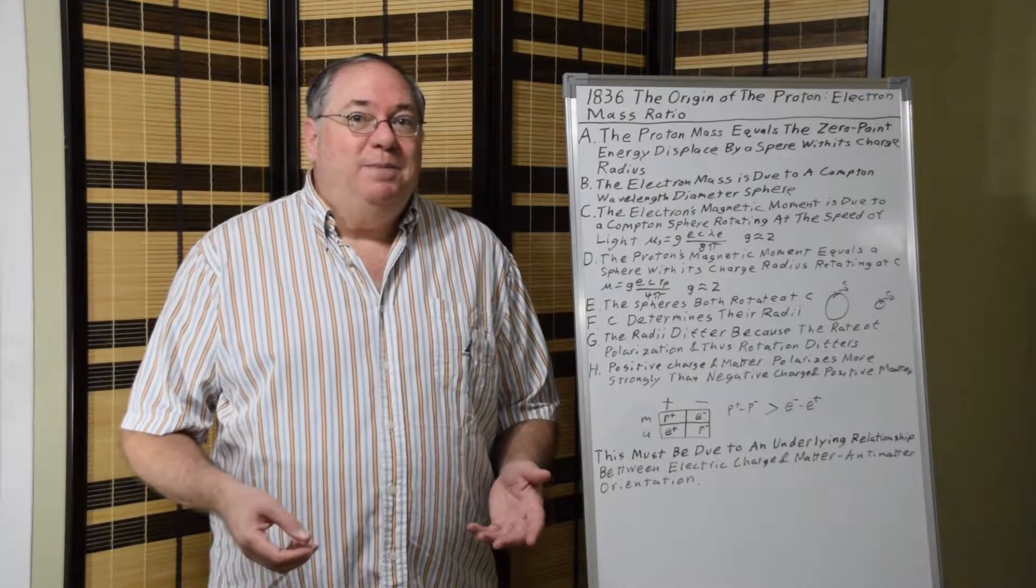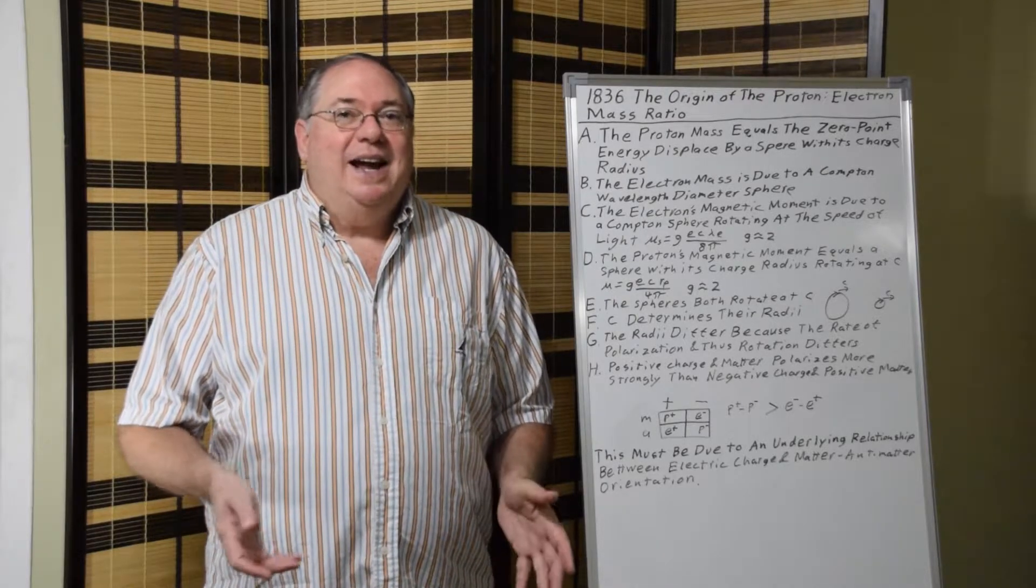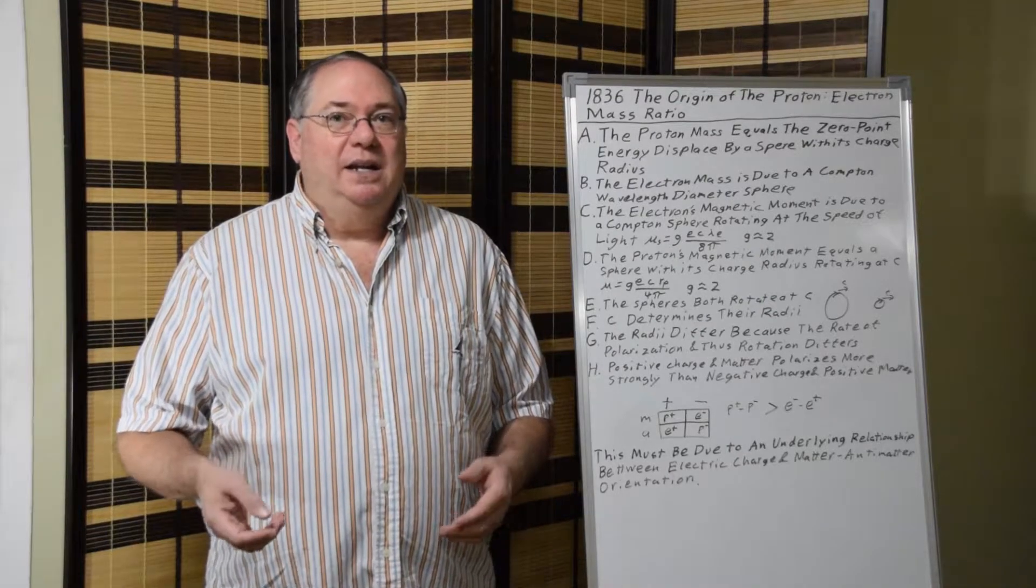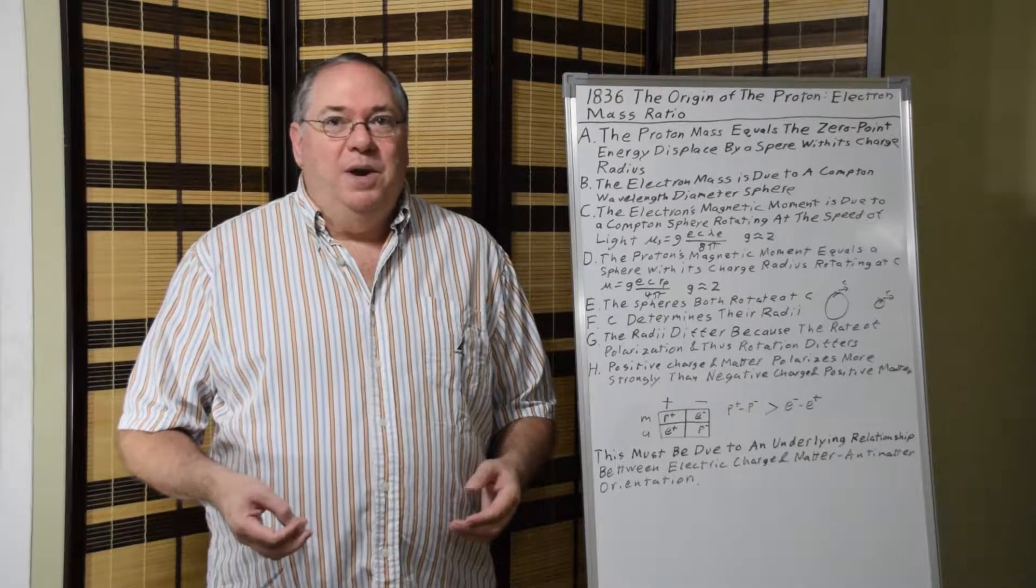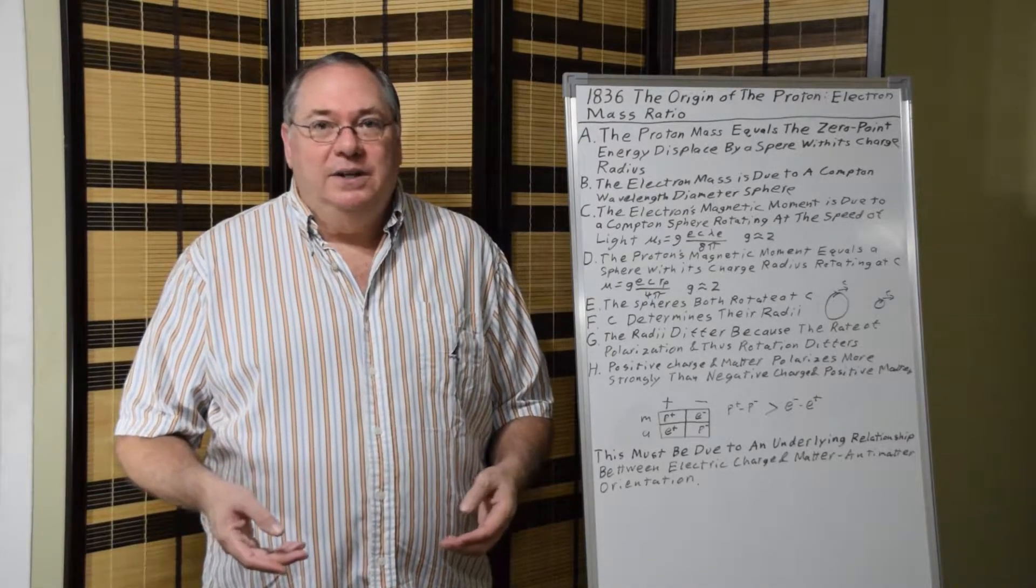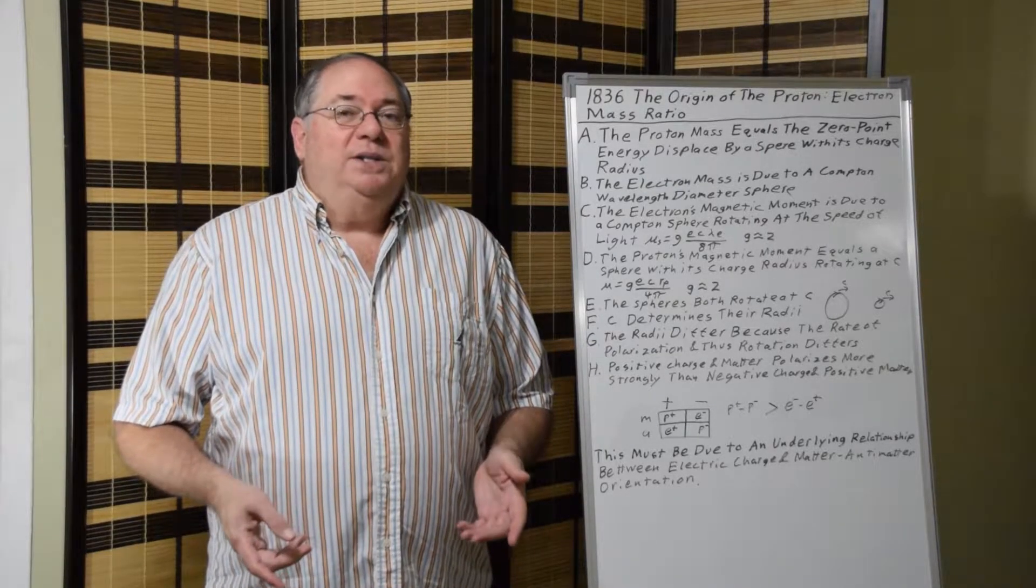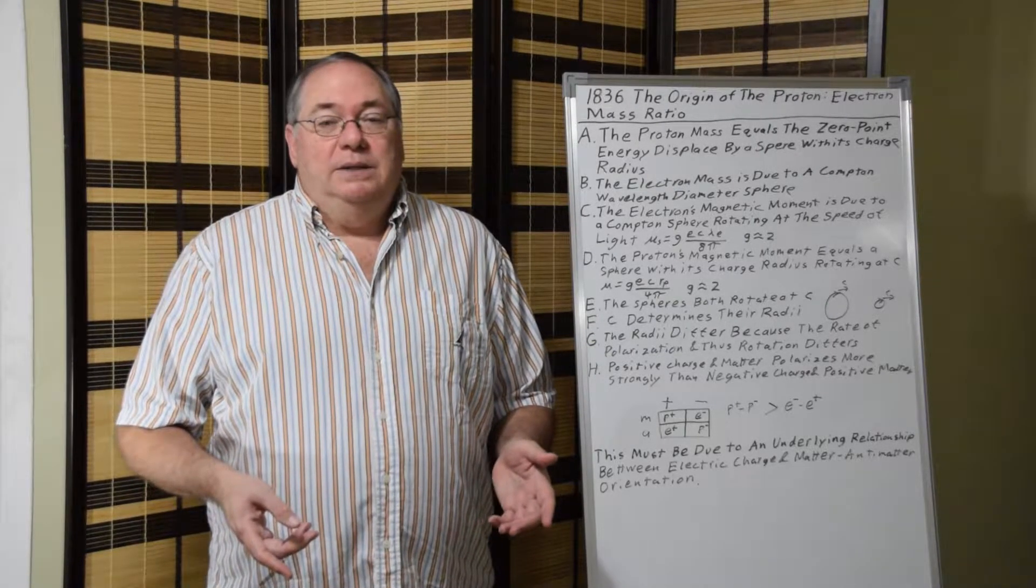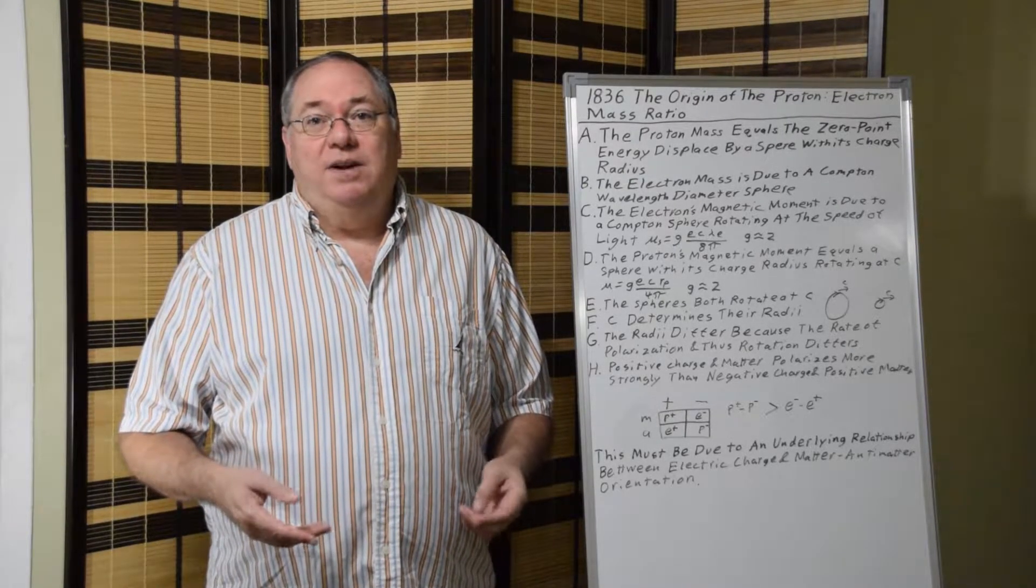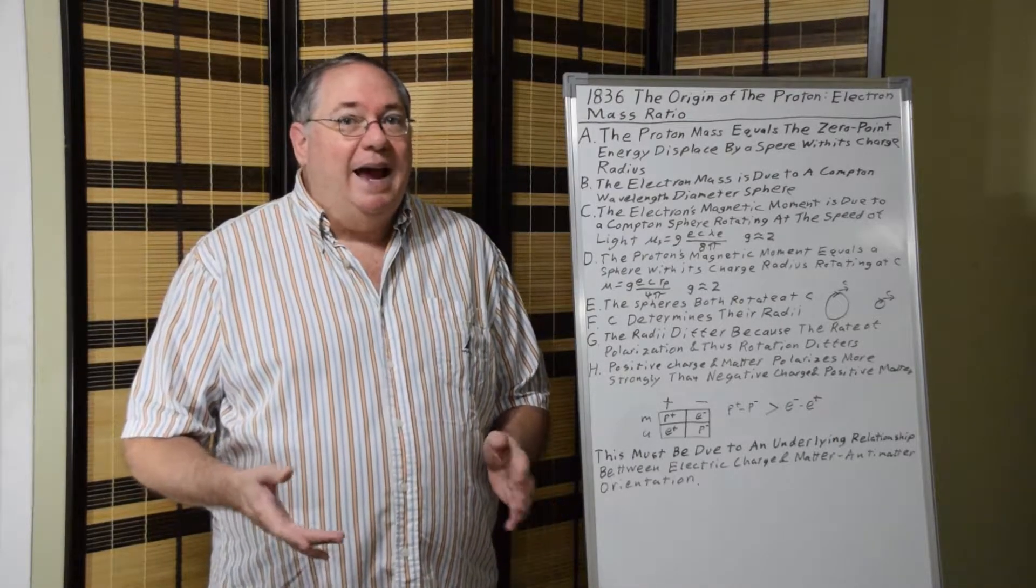This video is about the number 1836, which isn't exactly 1836, but it's the ratio of the masses between the proton and the electron. People want to know why we have this number 1836. Why is there a difference in mass? In order to answer a question, you first have to determine how do the protons and electrons have a mass. Why is never really the proper question. It's how.